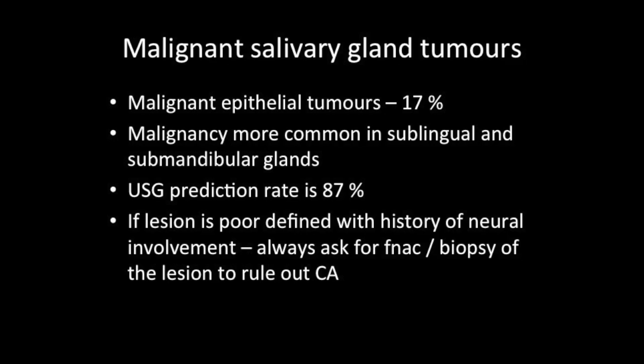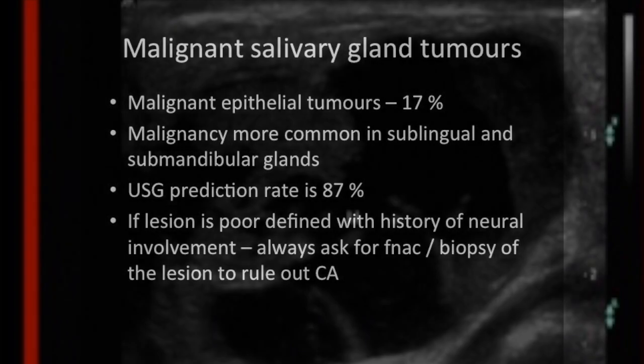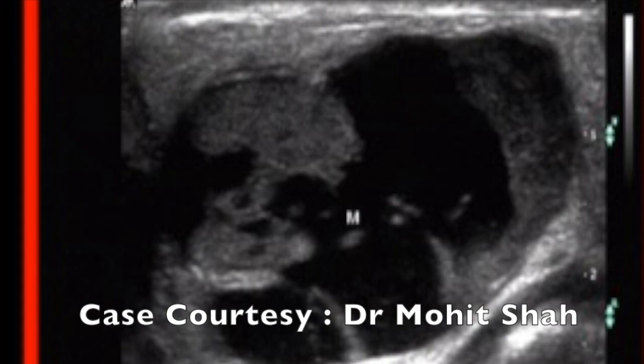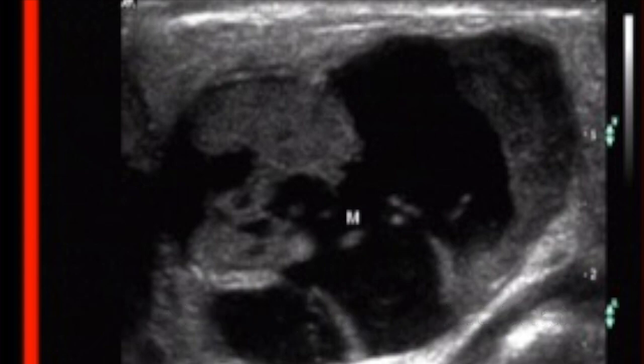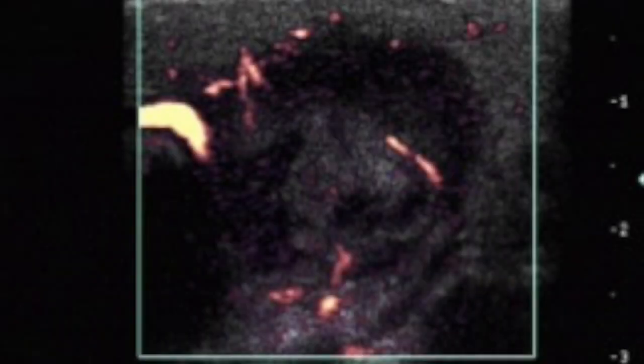See this case of adenoid cystic malignancy. It looks like a Warthin's tumor but has both solid and cystic areas along with significant vascularity within it — and this was proved to be a malignant tumor.